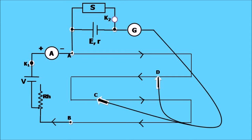The primary cell having EMF E and internal resistance R is shown in the diagram. The internal resistance of this primary cell is to be determined experimentally. S is the resistance box connected across the primary cell through key K2. The two terminals of the primary cell are considered as junctions. G is the galvanometer connected with a jockey. C and D are two positions of the jockey with K2 off and K2 on respectively. The ammeter shown in the diagram is to be connected during the actual experiment only, to ensure the constant flow of current between the two observations of the balance length. The ammeter reading is not required in the determination of internal resistance.